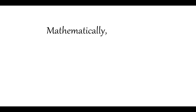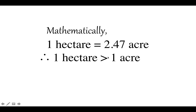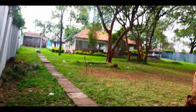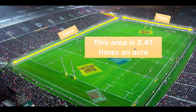Mathematically, one hectare equals 2.47 acres, which clearly shows that one hectare is always greater than one acre. For visual examples, this plot has an area of one acre, and here this plot also has an area of one acre. To understand it another way, the area of this international rugby field is 2.47 times an acre.